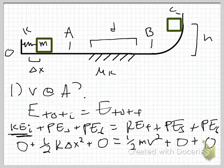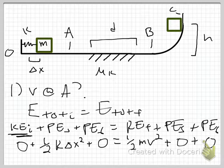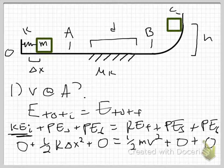Now I'm asked to find the speed at B. Let's think through this physically. The crate is going to go over the frictional patch. Friction is going to take energy out of the system — the thing will slow down. If I have a frictional force bleeding energy out of the system, I cannot use a conservation law. It's very difficult to sum up where all that energy went. So the easiest way to go is the work energy theorem.